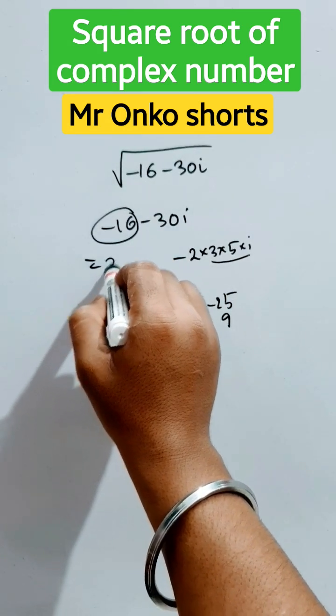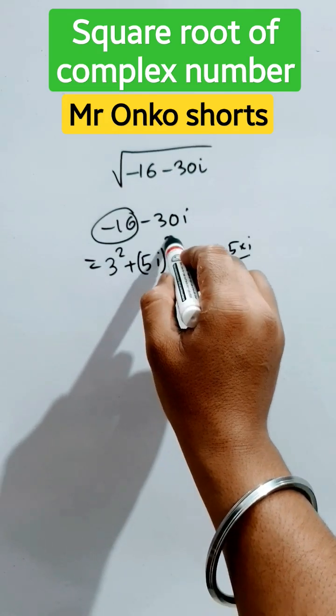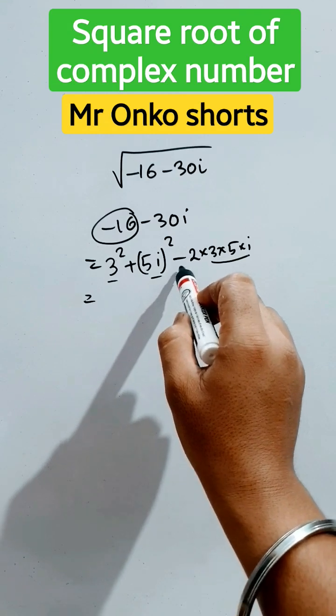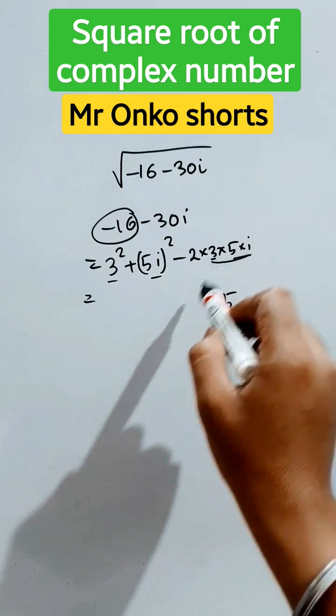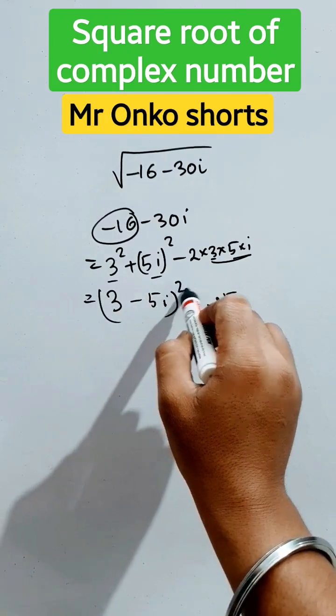Then we can write it as 3 square that is 9 plus 5i whole square that is minus 25. So the pattern will be a square plus b square minus 2ab. So it is a minus b whole square pattern.